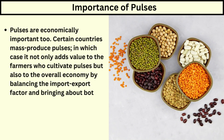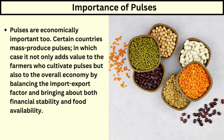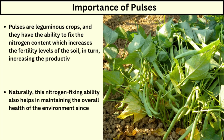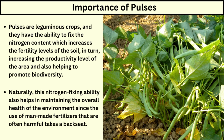Pulses are economically important too. Certain countries mass produce pulses, which not only adds value to the farmers who cultivate them, but also to the overall economy by balancing the import-export factor and bringing about financial stability and food availability. Pulses are leguminous crops and have the ability to fix nitrogen content, which increases the fertility levels of the soil, in turn increasing the productivity level of the area and also helping to promote biodiversity.